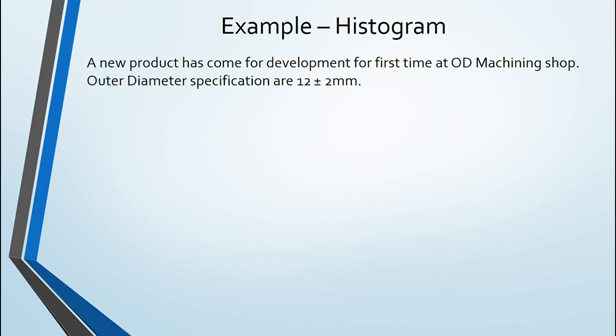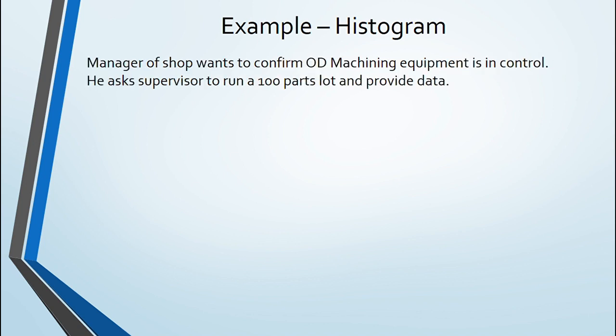Taking another example of a new product developed for first time at Outer Diameter Machining shop having specification of 12 plus minus 2 mm that is 10 to 14 mm. Shop manager wants to confirm whether his equipment for Outer Diameter Machining is in control.